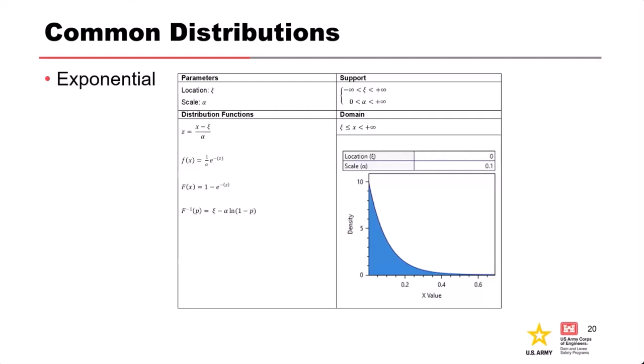The exponential distribution models the time between events in a Poisson process. If floods occur at a rate of 0.01 per year, for example, you can use the exponential distribution. The formula 1 minus e to the minus lambda-t gives us the probability of experiencing a flood over a given period — in our example, over 30 years.